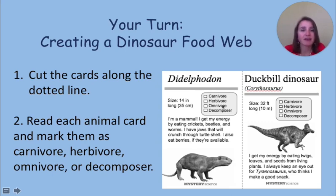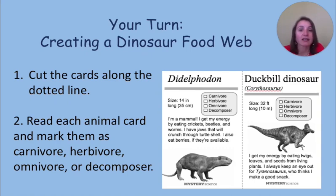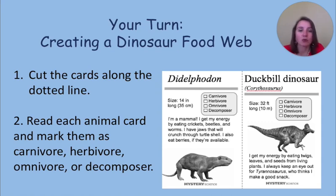Now let's read about the duck-billed dinosaur. Its size is 32 feet long, so it is much bigger than the didelphodon. It says: I get my energy by eating twigs, leaves, and seeds from living plants. I always keep an eye out for T-rex, who thinks I make a good snack. So the T-rex likes to eat the duck-billed dinosaur, and the duck-billed dinosaur is an herbivore because it only eats plants.